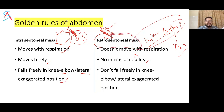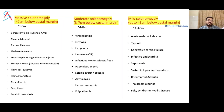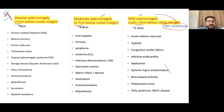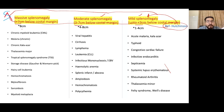Regarding splenomegaly grading (Hutchinson's classification): mild splenomegaly is less than 3 cm, moderate is 3 to 7 cm, and massive is more than 7 cm. Other references define mild as 1-4 cm, moderate as 4-8 cm, and massive as more than 8 cm. Massive splenomegaly is generally defined when it reaches the iliac crest, crosses the midline, or weighs more than 1.5 kg. Normal adult spleen weighs 70-200 grams and measures up to 12 cm in craniocaudal length.